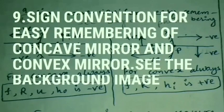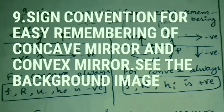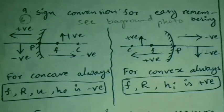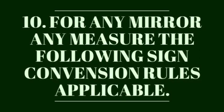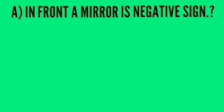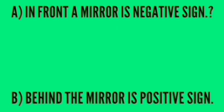Sign convention for easy remembering of concave mirror and convex mirror. See the background image. For any mirror, any measure, the following sign convention rules applicable. In front a mirror is negative sign. Behind the mirror is positive sign.